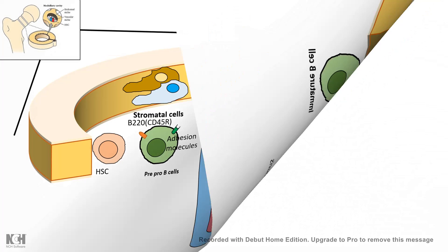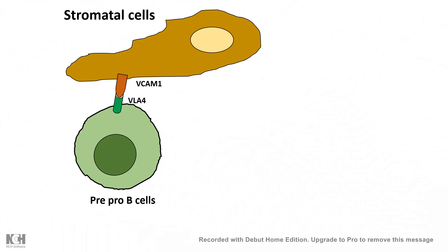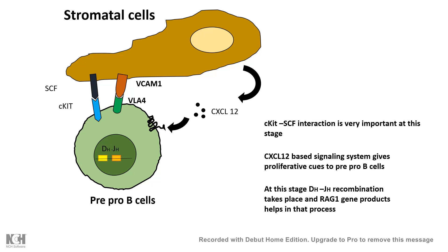In the early pre-pro B cell stage, the pre-pro B cell attaches to bone marrow stromal cells. Important interactions include SCF and c-KIT, and it expresses chemokine receptors such as CXCL12 receptor. These signals give rise to DJ recombination of the heavy chain gene at this stage.